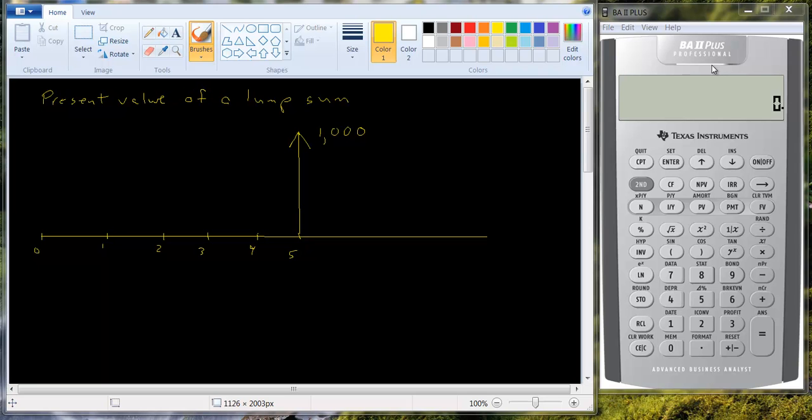Let's look at how we calculate the present value of a lump sum. We've already discussed how you compute the future value of a lump sum, and by a lump sum I mean one deposit, one withdrawal, one amount of money.